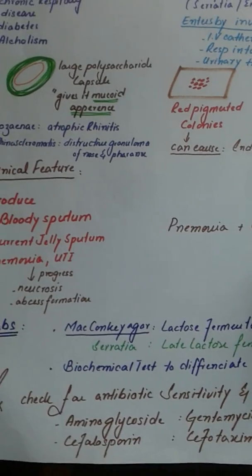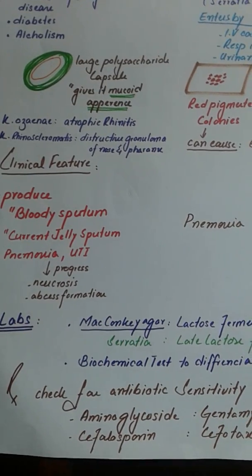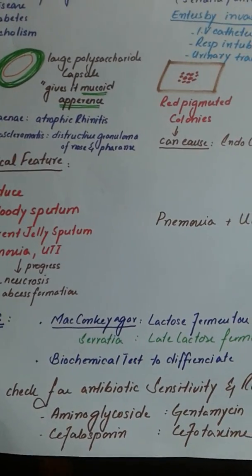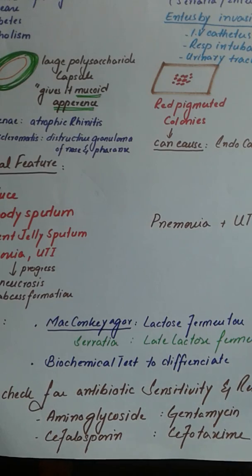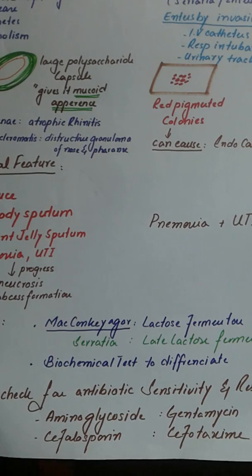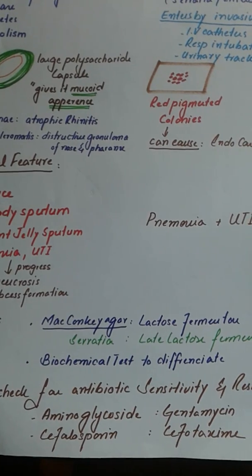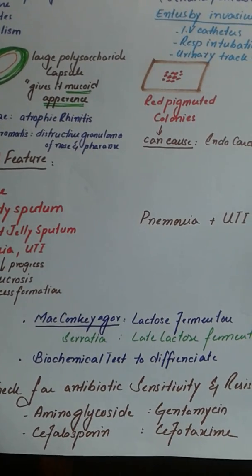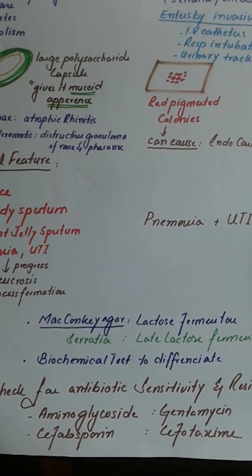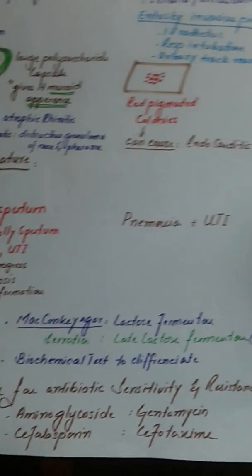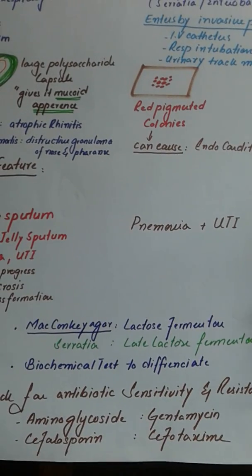For treatment, antibiotic sensitivity testing is done because there is a lot of resistance among these bacteria, so we need to culture the organism to determine which antibiotic it is susceptible to. In combination, we use aminoglycosides such as gentamicin and cephalosporins such as cefotaxime.